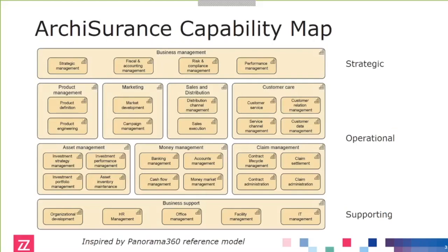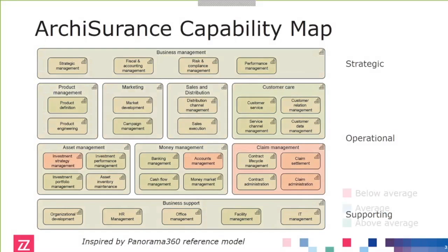Here you see the typical things that ArchiSurance needs to be able to do to function as an insurance company — their capabilities divided into strategic, operational, and supporting. They've made an assessment of current capabilities against efficiency, creating metrics benchmarked against an industry average. Here you see the heat map resulting from that: some capabilities perform really well — the green ones are above average — but some perform below average. Management uses this kind of depiction to see where they need to invest and improve.